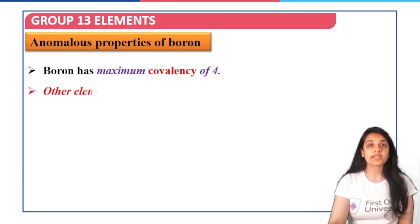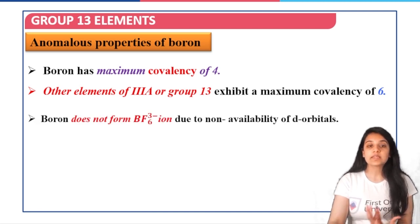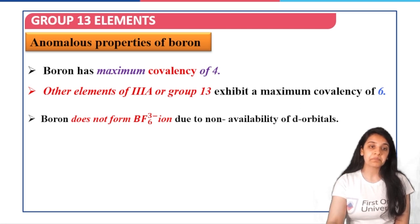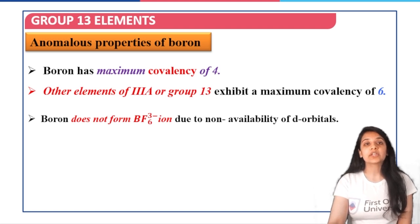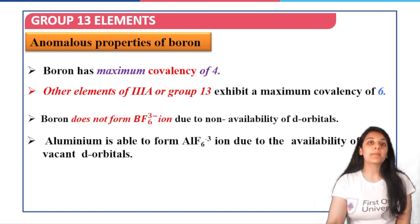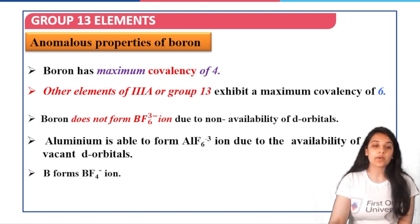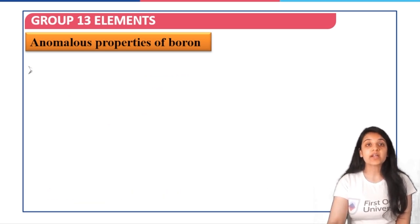Boron has a maximum covalency of 4, not beyond that, whereas other elements of group 13 can exhibit a maximum covalency of 6, having 6 ligands attached when acting as a central metal atom. Boron cannot form BF6^3- because of the non-availability of vacant d orbitals. Aluminum, however, can form AlF6^3- because it has vacant d orbitals, whereas boron can only form BF4-. Boron also forms covalent hydrides which are very stable.